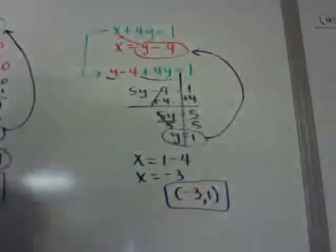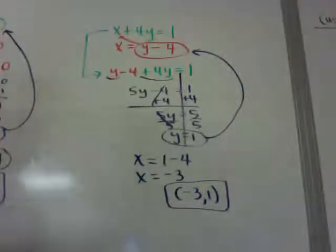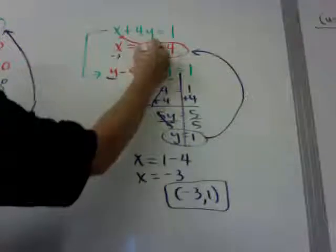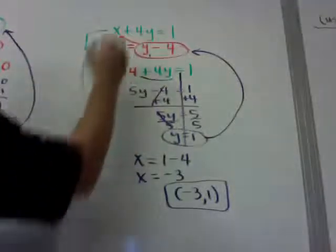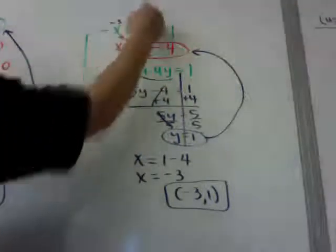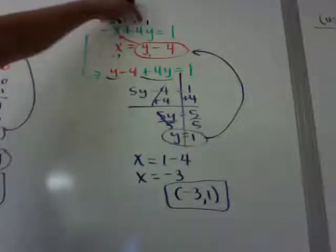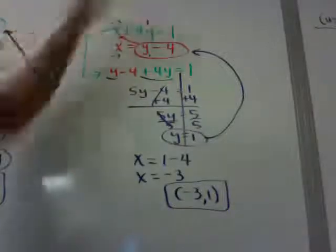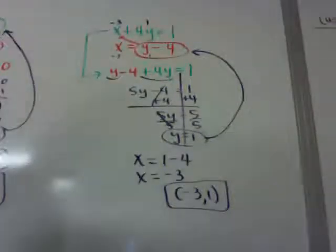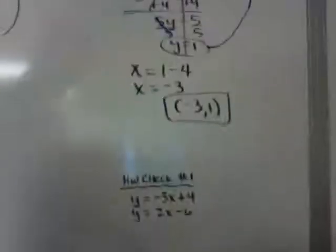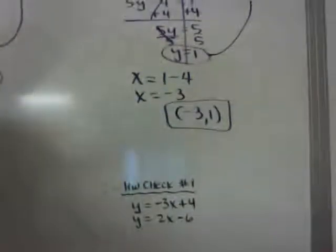Again, coordinate form. If I do a quick check — negative 3 here, 1 here: true. Negative 3 here, 1 here: negative 3 plus 4 is equal to 1, true. So that's three different examples. I'll show you one more, but here is homework check number 1 first. Take this y and put it into there and substitute, just like the first example. Put it into coordinate form.